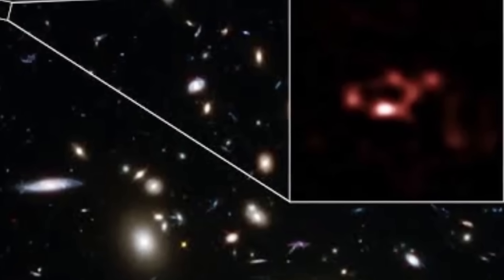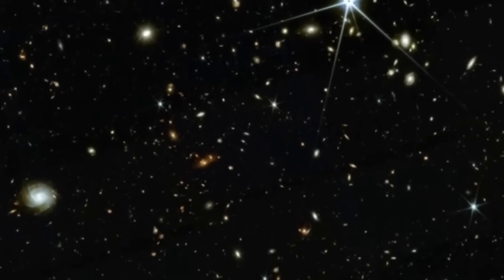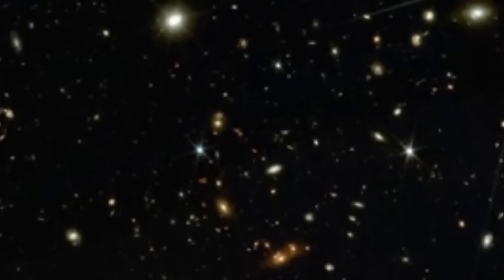There are places in the universe where light should never reach, regions so distant, so ancient that even time itself seems to break down. But the James Webb Space Telescope wasn't built to look at what's easy. It was designed to see what no other human instrument ever could.